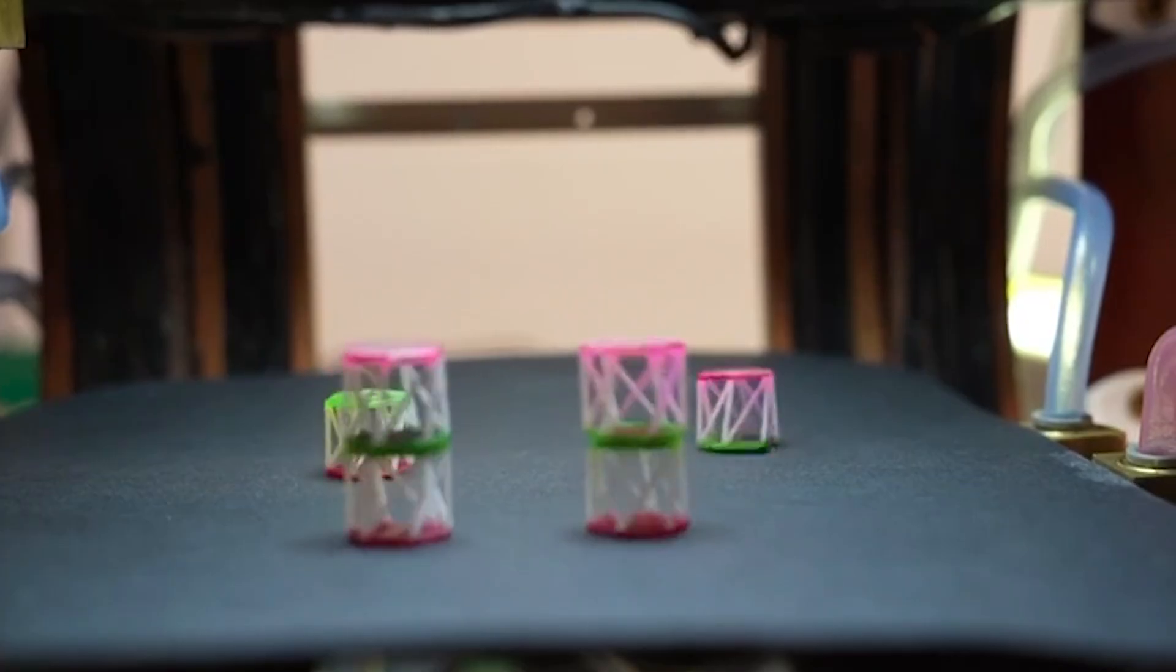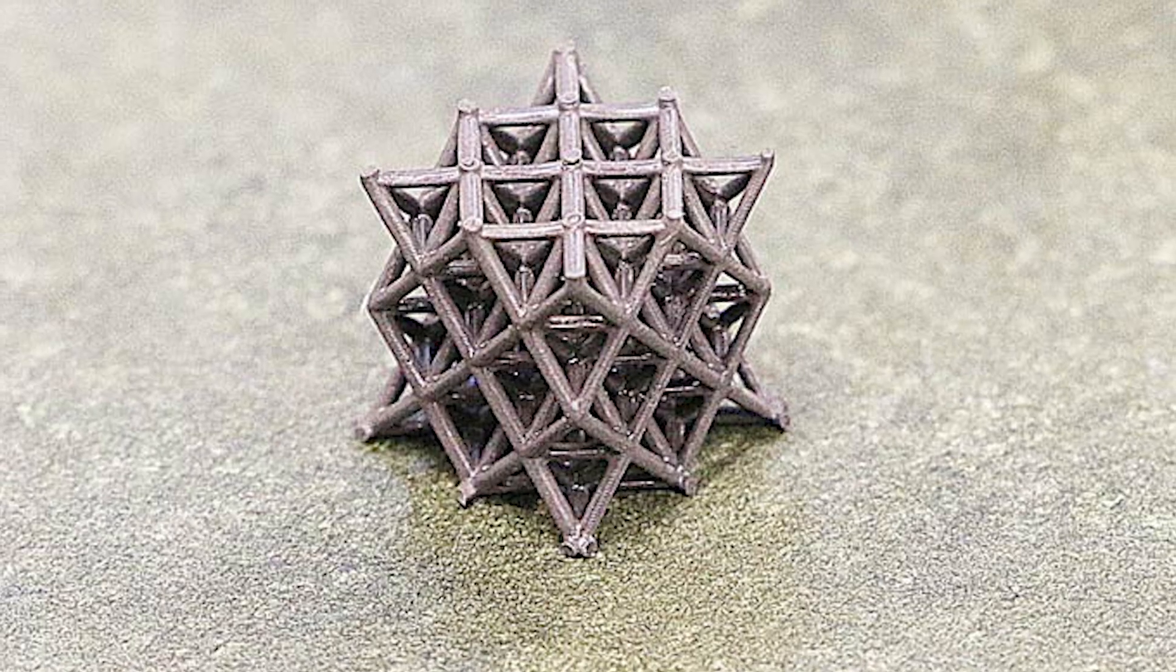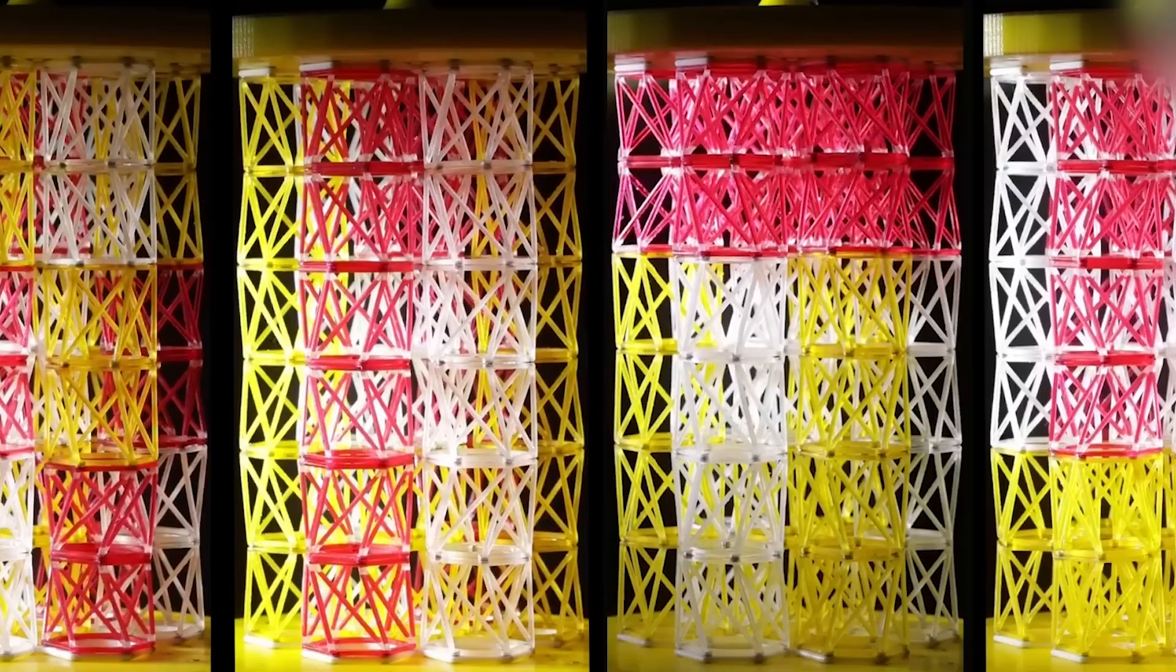In a way, these little origami-inspired cubes are like pixels in a 3D material screen, each one programmable, each one capable of motion. And when you put them together, they stop being robot parts and start being robotic materials.